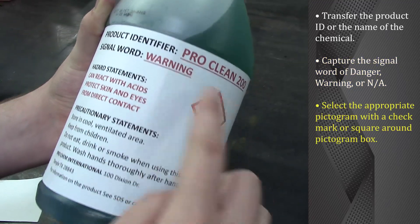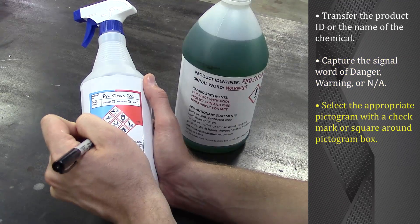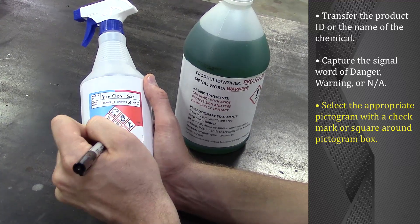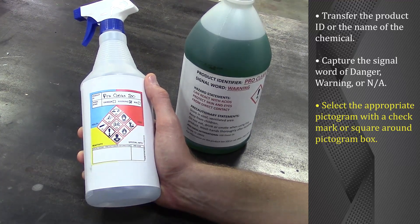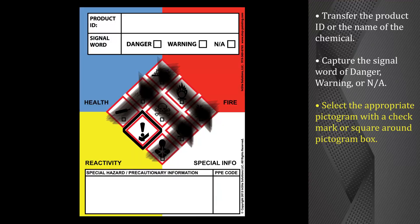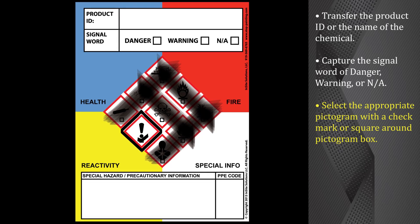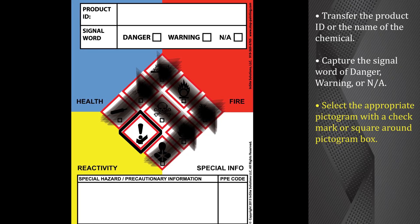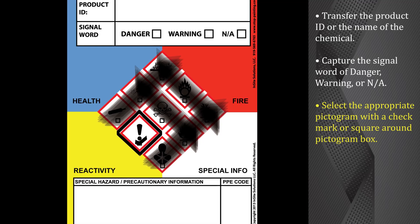Select the appropriate pictogram. This can be done by placing a check in the check box or putting a square around the pictogram. To further assure safety, employees may blacken out any unessential pictograms as shown here.